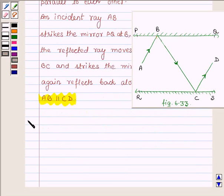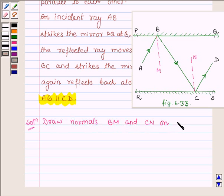Let us now begin with the solution and first let us draw normals BM and CN on PQ and RS respectively. Let us write the construction: draw normals BM and CN on plane mirrors PQ and RS respectively.